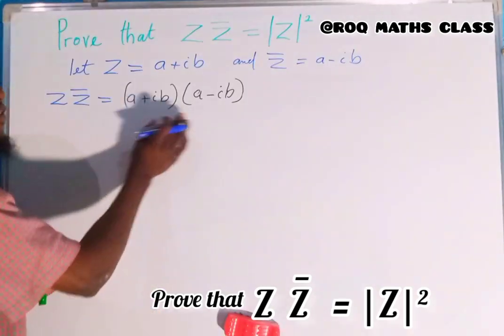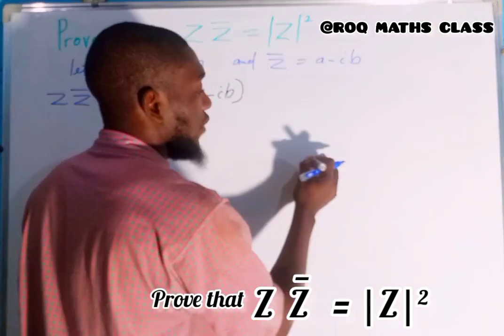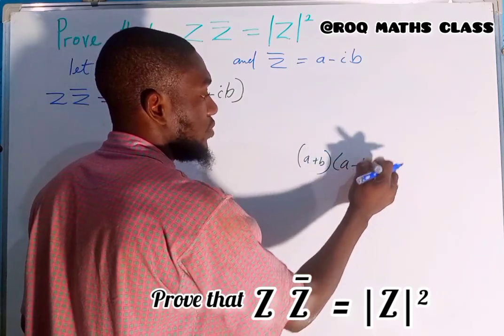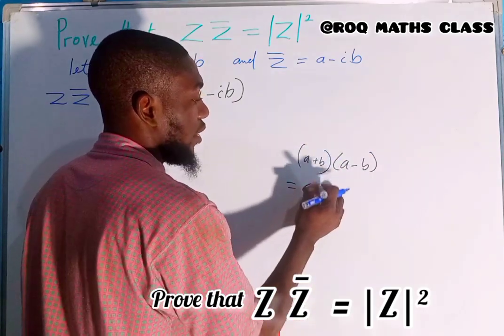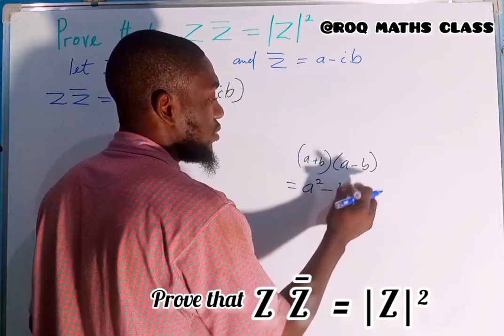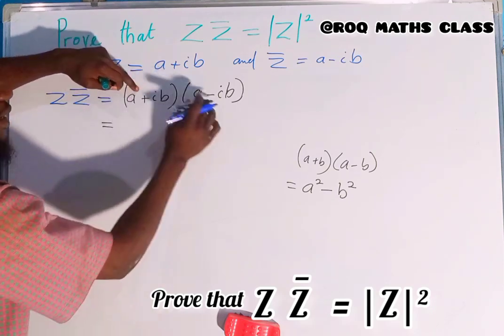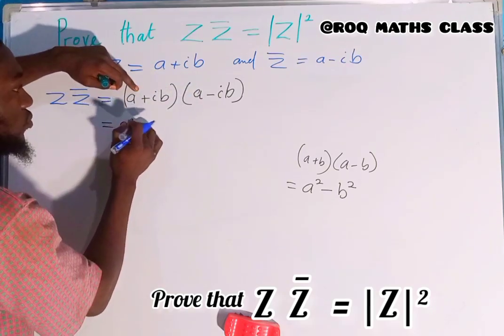Don't forget that whenever you have difference of two squares, where we have a plus b multiplied by a minus b, the result is a squared minus b squared. But let us expand this together. I'm going to have a times a, which is a squared.